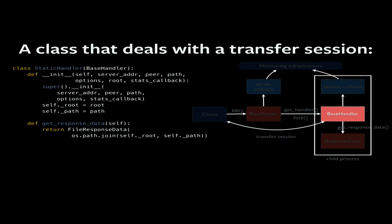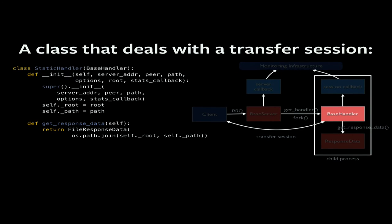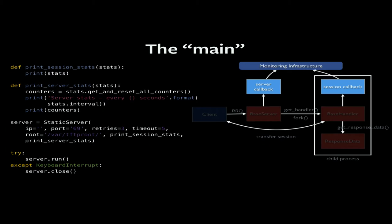Then you implement the static handler, inheriting the base object, calling the constructor, and exposing the root directory and path, which you pass to the get_response_data method. For the BaseServer, you do something similar — you inherit it, call the constructor, initialize the root, initialize the handler stats callback, and override get_handler to return the object declared in the handler class. In the main function, the top two functions are your callbacks — you get a dictionary of statistics and can do whatever you want with them to push counters to your monitoring infrastructure. Then you initialize the server and call the run method.